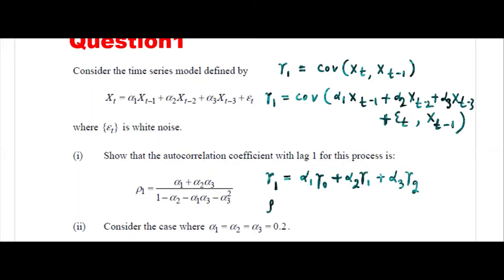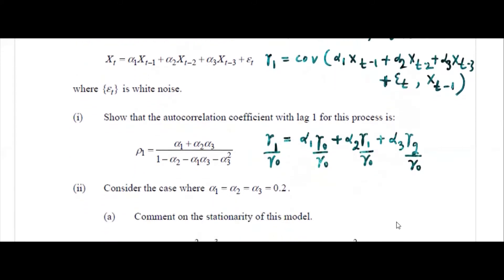So rho 1, if you divide by gamma 0, you write this way. Then gamma 1 divided by gamma 0 will be rho 1: alpha 1 plus alpha 2 times rho 1, plus alpha 3 times rho 2. Now if you see, this is one equation but we have two unknowns — rho 1 and rho 2 — so that's the problem.